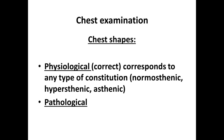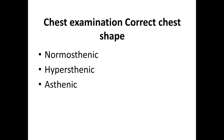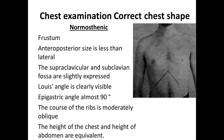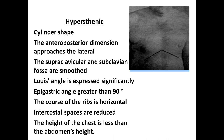There are two kinds of chest shapes: physiological and pathological. Physiological chest shapes include three types: normosthenic, hypersthenic, and asthenic. Normosthenic type has a frustum shape; anteroposterior size is less than lateral; supraclavicular and infraclavicular fossae are slightly expressed; the Louis angle is clearly visible; the epigastric angle is almost 90 degrees; course of ribs is moderately oblique; height of chest and height of abdomen are equal.